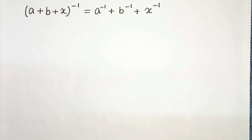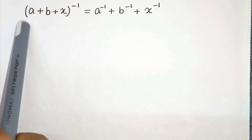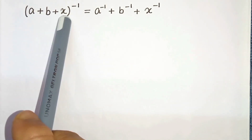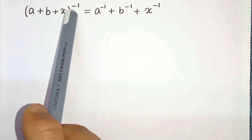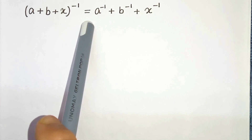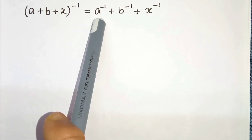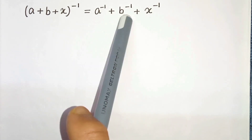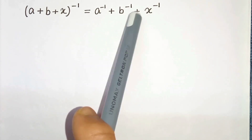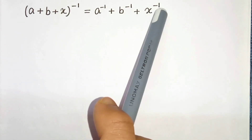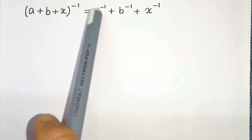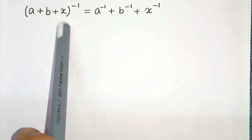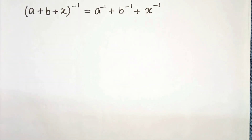Hello everyone. In this video we have (a + b + x) to the power minus 1 equals to a to the power minus 1 plus b to the power minus 1 plus x to the power minus 1. We have to solve for x. So let's start.